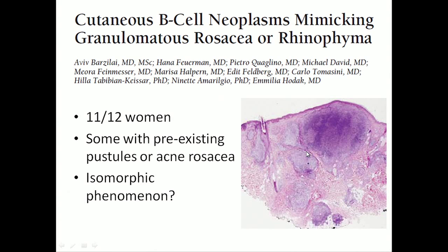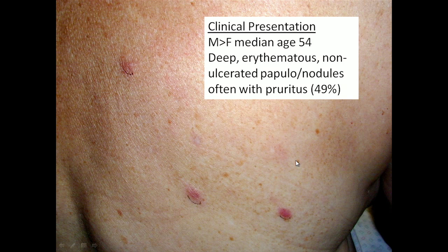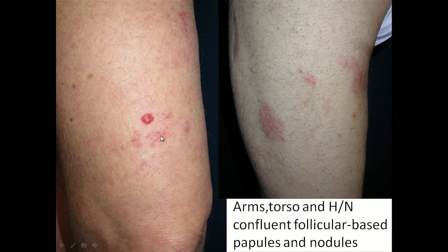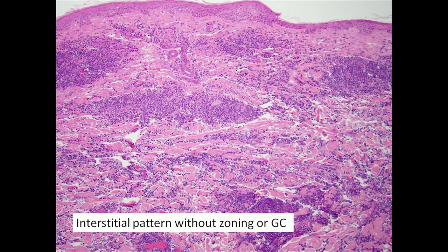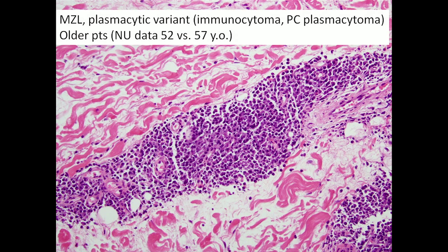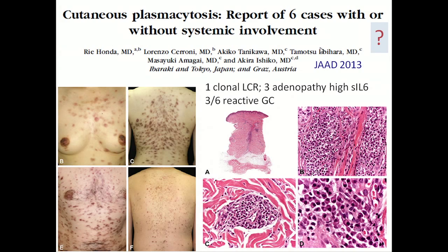In general, MZLs are more common in males, tend to be deep lesions, often very pruritic, and you often find follicular prominence with peri-adnexal distribution. Especially early on, you see vertical growth along the peri-adnexal dermis. Over time, they become purely plasmacytic — what we used to call immunocytoma or primary cutaneous plasmacytoma. In Asia, they call this cutaneous plasmacytosis, which is probably the same process as marginal zone lymphoma. Some of those Asian patients may have Castleman's disease with high serum IL-6; others have positive clonality, making them true marginal zone lymphomas.